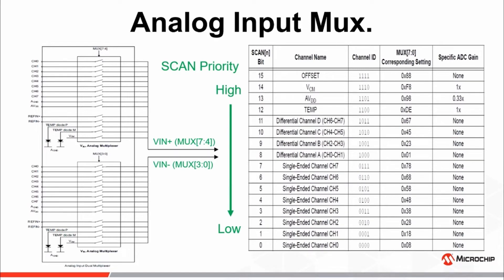The input multiplexer also offers the ability to automatically and sequentially scan and convert a user-defined set of analog inputs, programmable via the scan register. The priority of conversions for channels enabled for scan mode operation range from the offset measurement being of highest priority and the single-ended channel zero measurement being of lowest priority.